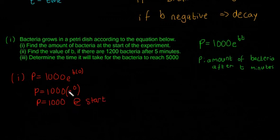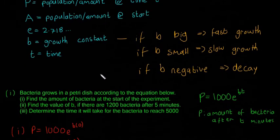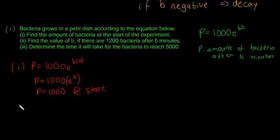Okay, so that's that first part done. And that just shows that, kind of like I was saying, the number before that E to the B something, that's always the amount at the start. And you can prove it by doing that if you want. Okay, next question is part 2. Find the value of B if there are 1200 bacteria after 5 minutes.